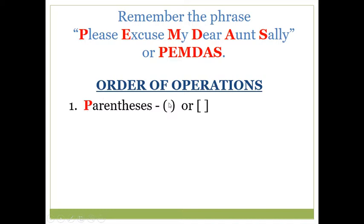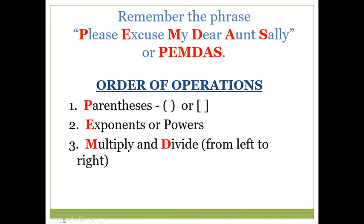The P stands for parentheses — those are the left and right parentheses, and you can think of anything inside them as being a group, like a little basket that holds everything inside it. Brackets work the same way. The E stands for exponents or powers. When you take a number and raise it to a 2 or a 3, like you saw in your previous lesson, that's an exponent. For example, 3 to the second power — that superscript on the 3 is the exponent.